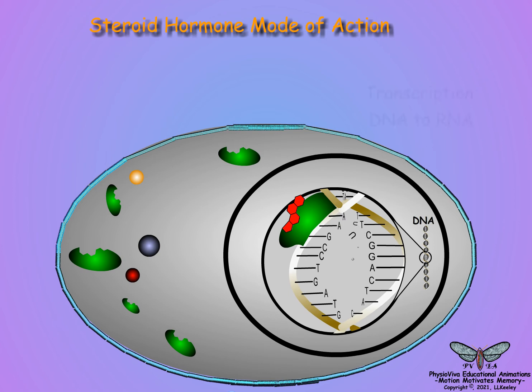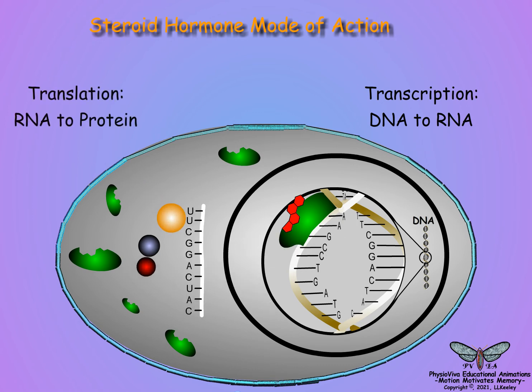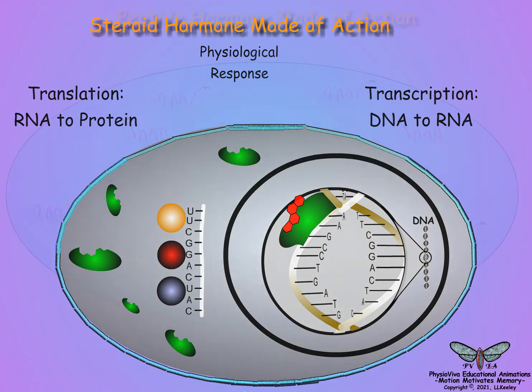In summary, the hormone-activated genes transcribe their DNA code into RNA. The RNA then passes from the nucleus to the cytoplasm where the RNA transcript of the DNA code is translated into the specific proteins required to produce the hormone-regulated physiological response.